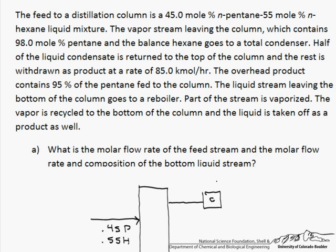Half of the liquid condensate is returned to the top of the column, and the rest is withdrawn as a product at a rate of 85 kilomoles per hour. The overhead product contains 95 percent of the pentane fed to the column.